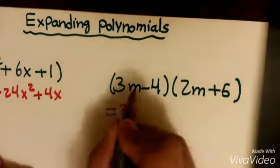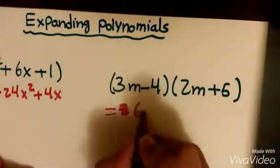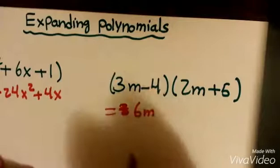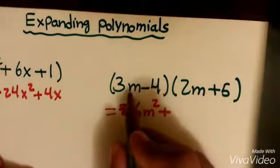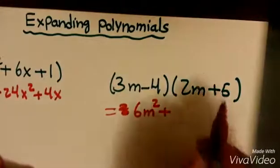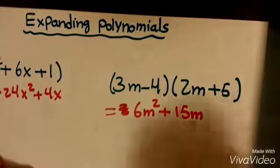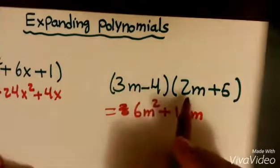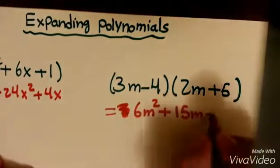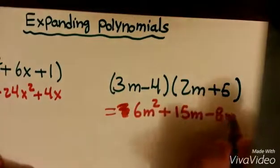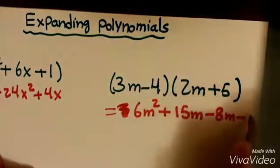3m times 2m gives me 6m squared, plus 3m times positive 5 gives me positive 15m. Negative 4 times 2m gives me negative 8m. Negative 4 times 5 is negative 20.